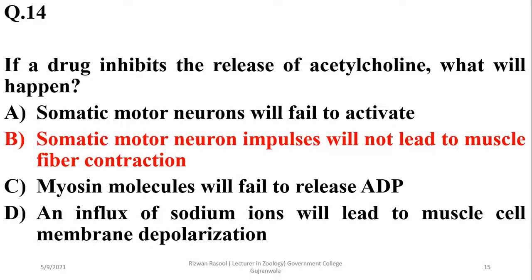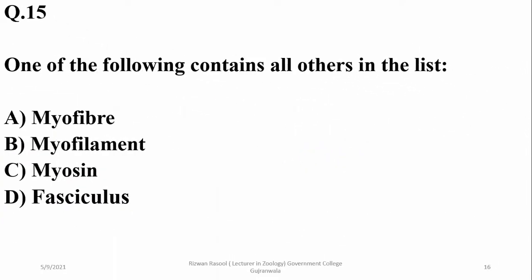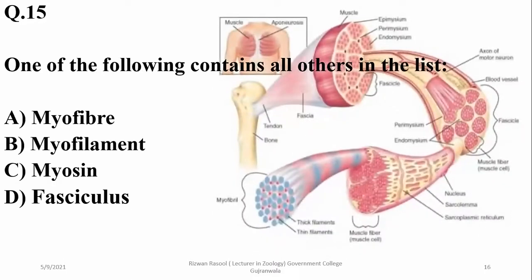Which of the following contains all others in the list? It is the muscle bundle or fasciculus, which contains muscle fibers, myofilaments, and myosin. The right option is delta — it is the fascicle or muscle bundle.